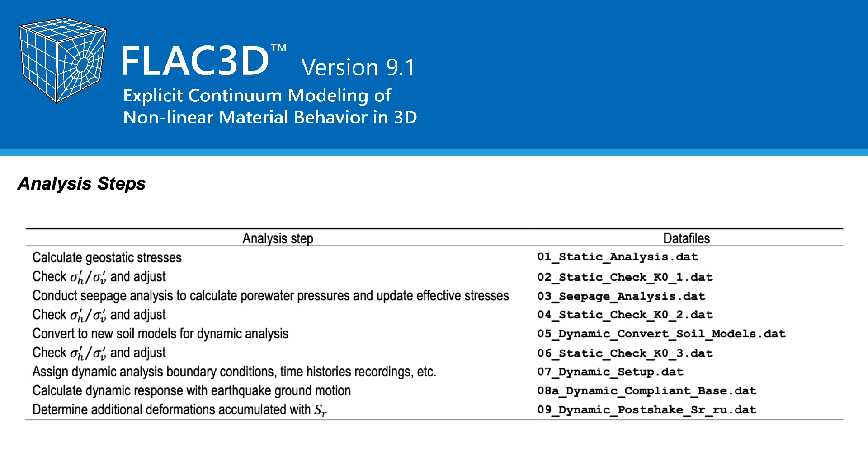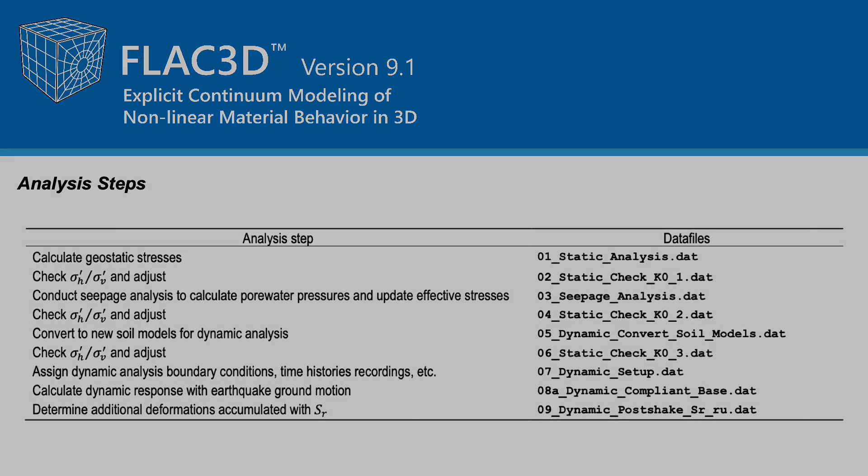In the seventh analysis step, the boundary conditions and damping characteristics of the model are changed. The eighth analysis step corresponds to the actual analysis step in which the dynamic response with the earthquake motion is determined. Finally, in the final, ninth analysis step, additional gravity-driven deformations accumulated are determined if portions of the alluvium reach the residual shear strength. This completes the formal description of the problem analyzed.